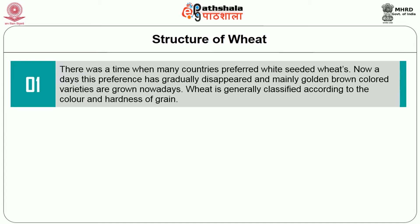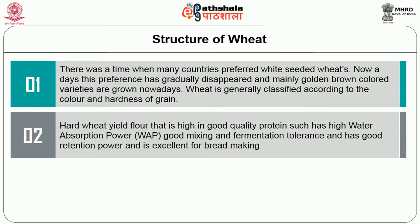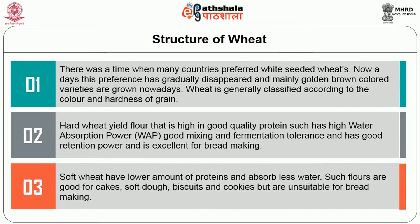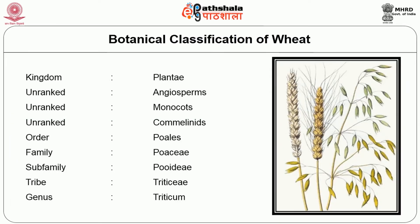There was a time when many countries preferred white-seeded wheat. Nowadays, this preference has gradually disappeared and mainly golden-brown colored varieties are grown. Wheat is generally classified according to the color and hardness of the grain. Hard wheat yields flour that is high in good quality protein such as gluten, has high water absorption power, good mixing and fermentation tolerance, good retention power, and is excellent for bread making. Soft wheat has lower amounts of protein and absorbs less water; such flours are good for cakes, soft dough, biscuits and cookies but unsuitable for bread making.